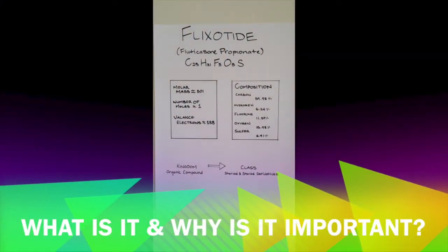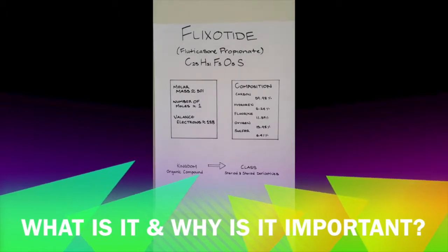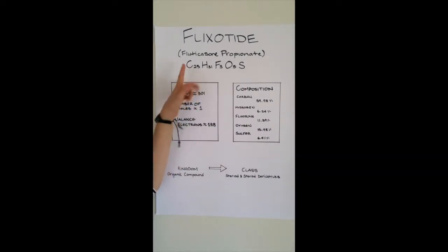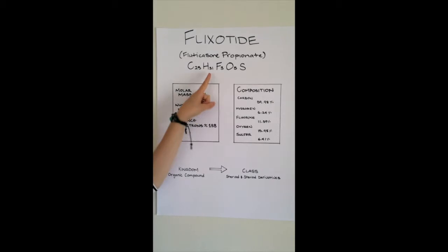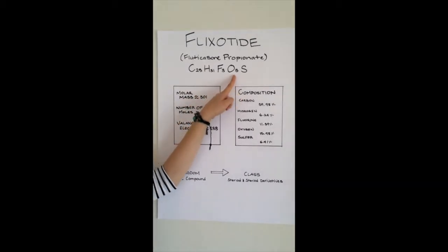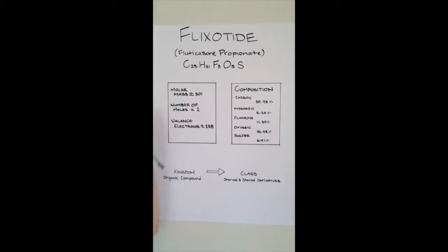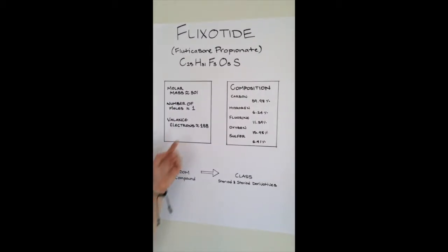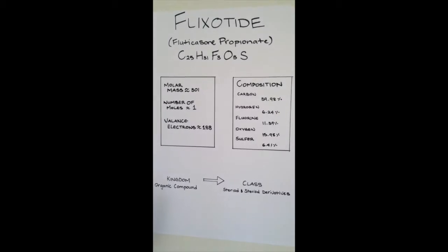Flixotide, or known as fluticasone propionate, has a chemical formula that looks like this. It has 25 carbon atoms, 31 hydrogen atoms, 3 fluorine atoms, 5 oxygen and 1 sulfur. It's got a molar mass of roughly 501 with roughly 188 valence electrons.